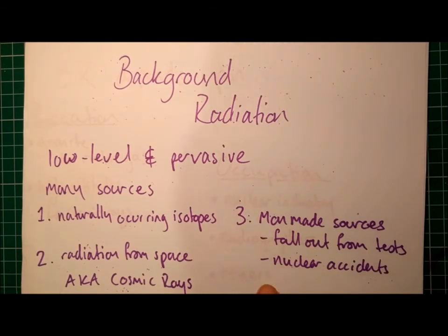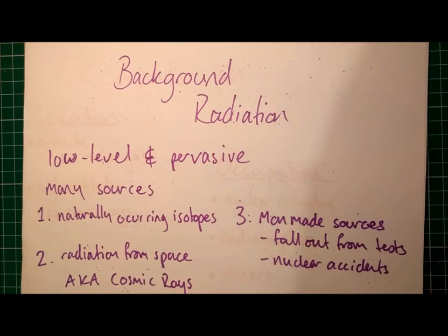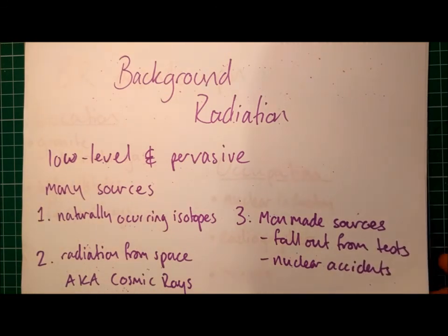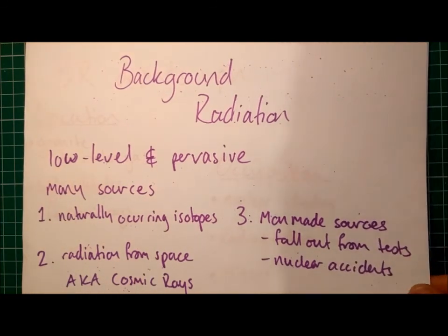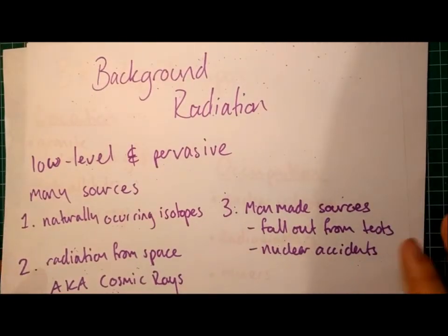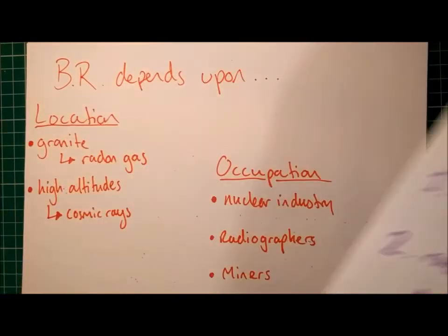The third source is man-made sources. This includes fallout from nuclear weapons use in World War II, but also from nuclear weapon tests, as well as radiation from nuclear accidents such as Chernobyl in 1986 in Ukraine, or on a much smaller scale, the Fukushima accident in Japan. I must stress that the man-made sources make up a very small portion of our background radiation at present.